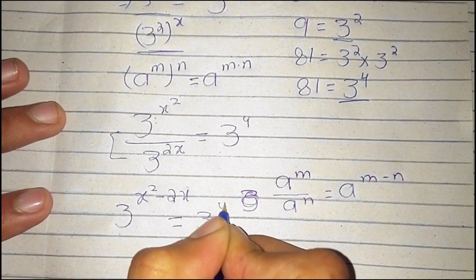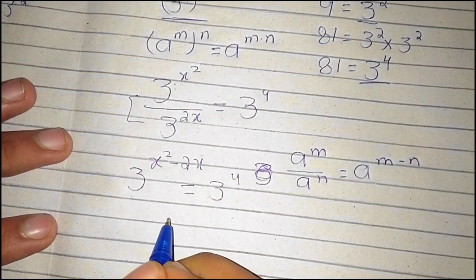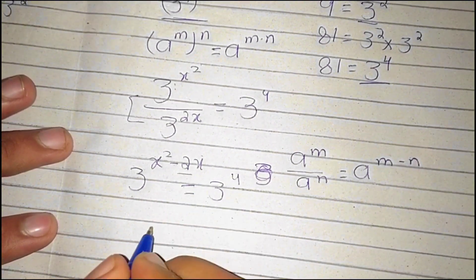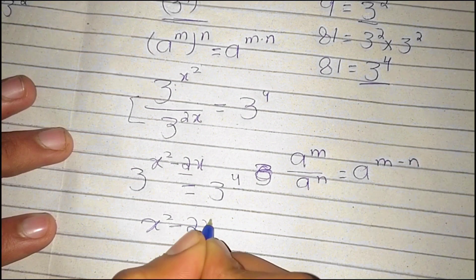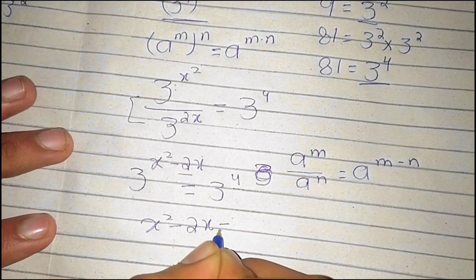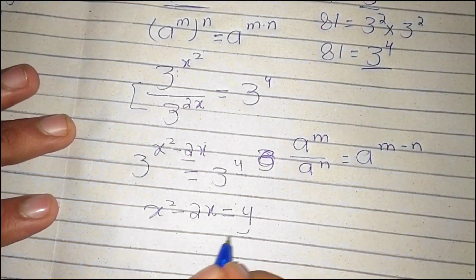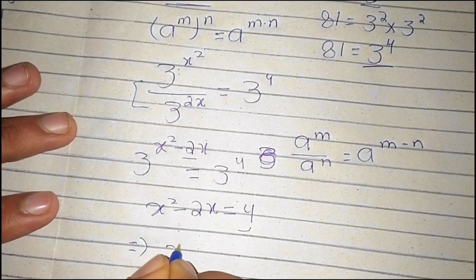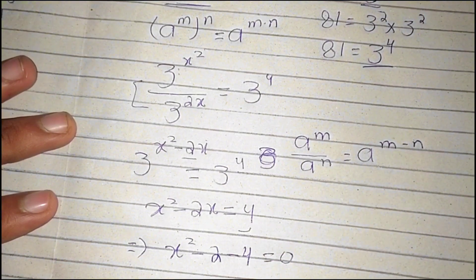Applying this law, it becomes 3 power x squared minus 2x, is equal to 3 power 4. We have the same base on both sides, so we can compare the exponents. Therefore x squared minus 2x is equal to 4, and rearranging gives x squared minus 2x minus 4 is equal to 0.